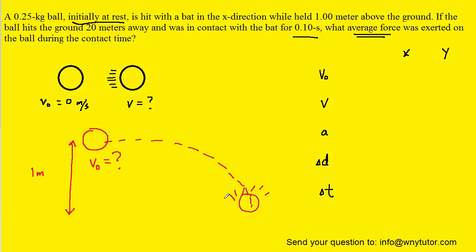Let's fill in the y-direction values. The initial velocity in the y direction is 0 meters per second, because the ball initially is not moving downward or upward — it's only moving forward in the x direction. The acceleration in the y direction is due to gravity: negative 9.8 meters per second squared. The displacement in the y direction is negative 1 meter, because the ball moves downward. The time interval and the final velocity in the y direction are both unknown.